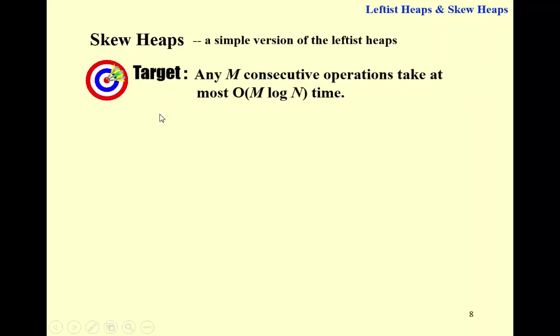And the target is what? Do you still remember the target of a splay tree? It's the same. Any M consecutive operations take at most big O of M times log N time. It means that even though a simpler strategy means that for the skew heap, we might obtain a very long right path. In the worst case, that path can be big O of N. But the amortized time for each operation is sufficiently good. It's going to be big O of log N.